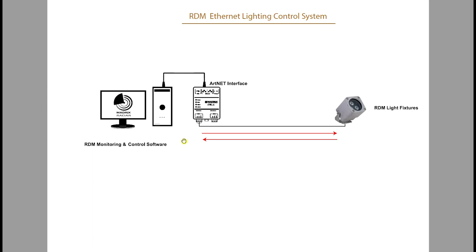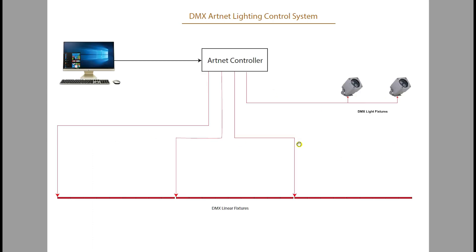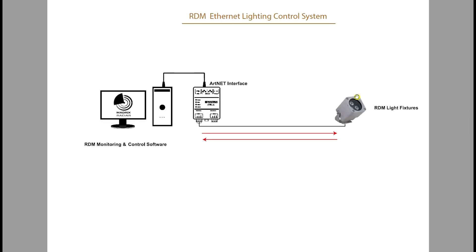RDM and Art Net are similar in many ways. The key difference is in the signal direction. Standard DMX is a one-way signal — the computer sends a signal to the subcontroller, and the subcontroller tells the light to change color. RDM, by contrast, is a two-way signal. There is a separate lecture on RDM that explains it in detail — please check that out.